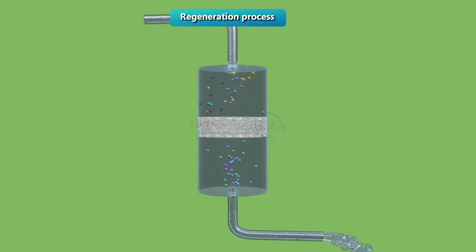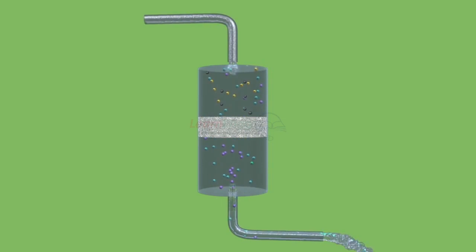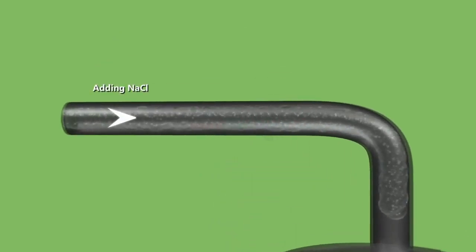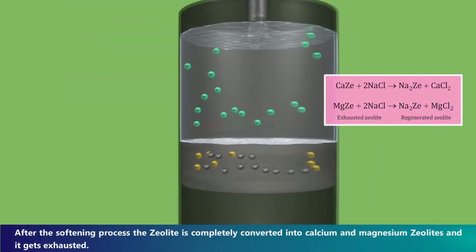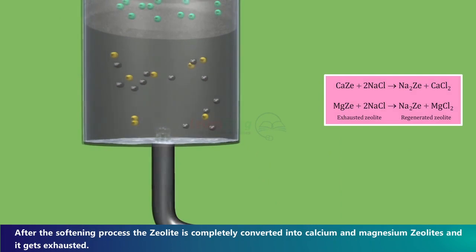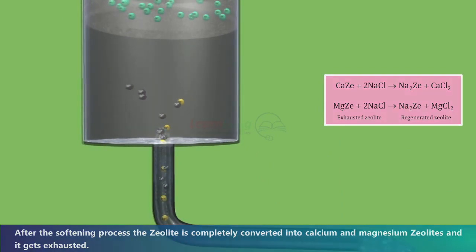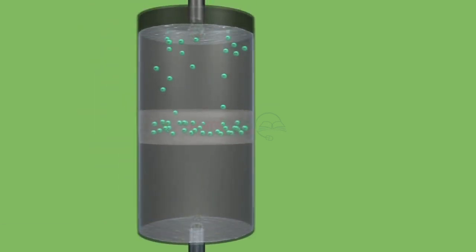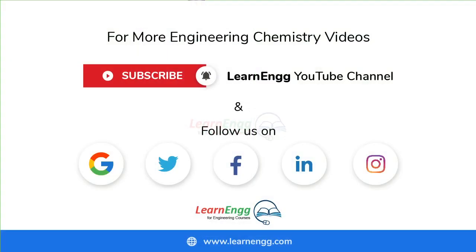Regeneration process: after the softening process, the zeolite is completely converted into calcium and magnesium zeolites and becomes exhausted. Sodium chloride (NaCl) solution is added; the resin absorbs the Na⁺ ions and releases all Ca²⁺ and Mg²⁺ ions, regenerating the zeolite. For more engineering chemistry videos, subscribe to the LearnInk YouTube channel and follow on all social media.